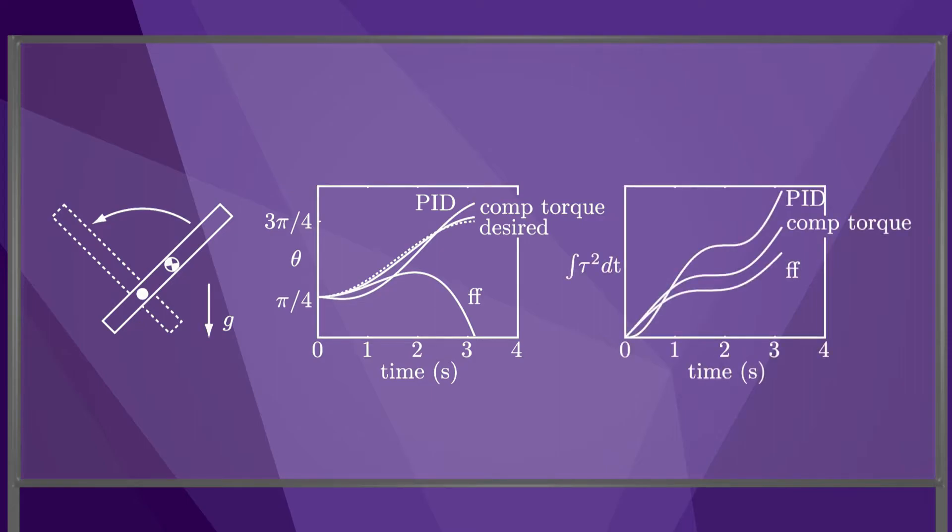We could also look at a standard measure of the control effort exerted by the motor, the time integral of the torque squared. At first, the PID control effort is the lowest, before the error builds up to start driving the torque. Soon, though, the PID control effort exceeds the control effort of the computed torque method.